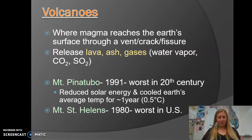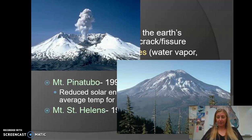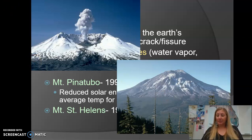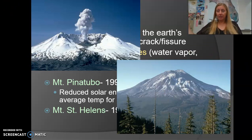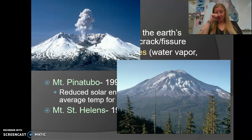Mount St. Helens — just for something that happened in the United States — erupted in 1980. Pictures of Mount St. Helens show before the eruption on the bottom and after on the top. You can see the whole side of the mountain was just blasted off, and you had a huge flow of hot ash and hot water rushing down the side. It wasn't lava, but something called a pyroclastic flow — super-heated water and super-hot ash racing down the mountain, causing flooding and devastation in surrounding areas.